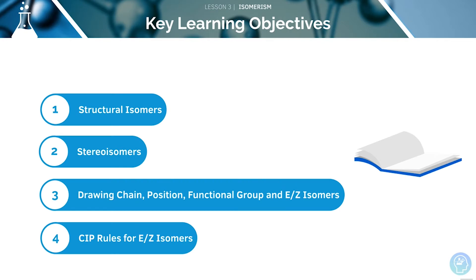Here are the key learning objectives for today's lesson. First, we'll be looking at structural isomers, then at stereoisomers. We'll then look at drawing various types of isomers, and finally at the CIP rules for EZ isomerism.